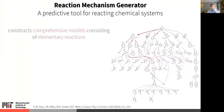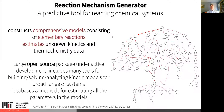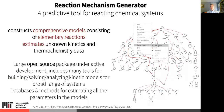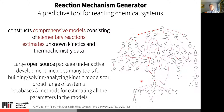The Reaction Mechanism Generator is a tool for predicting what will happen in reacting chemical systems. It constructs comprehensive kinetic models of elementary reactions and estimates the unknown rate parameters and thermochemistry to get the equilibrium constants. This is a large open source package under active development. On the right is just one of the reaction networks that RMG has constructed — these are just the main pathways, and there are many other pathways in this mechanism.